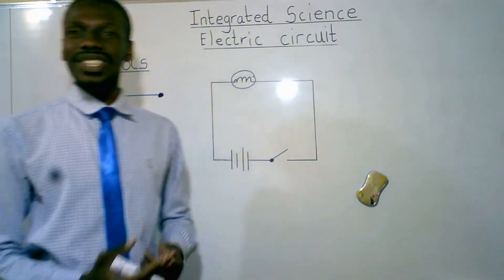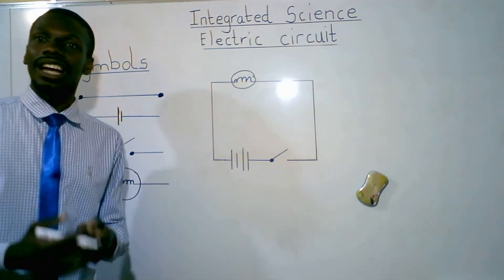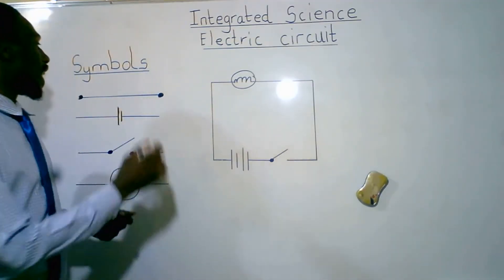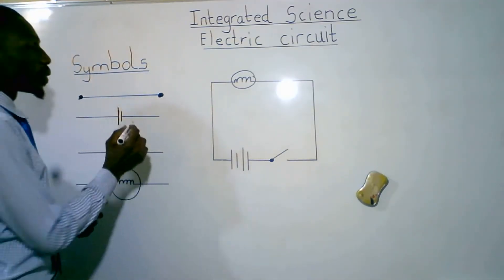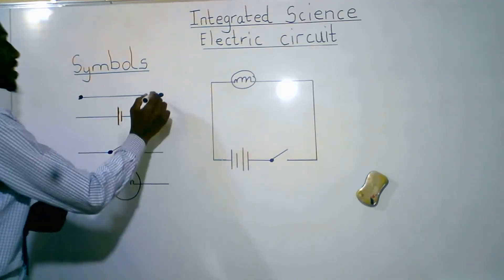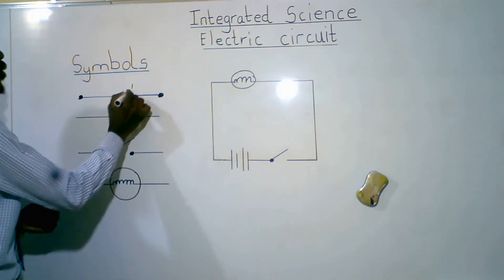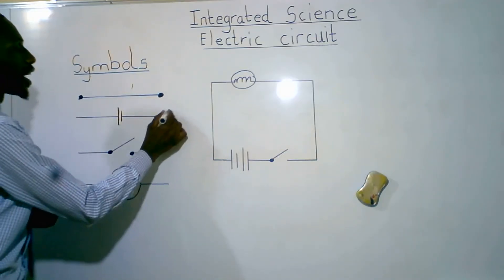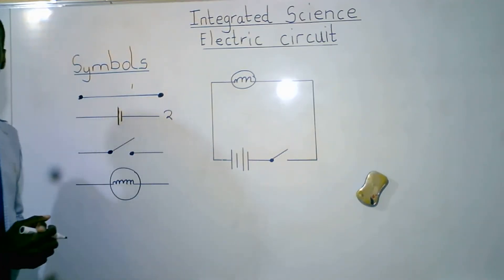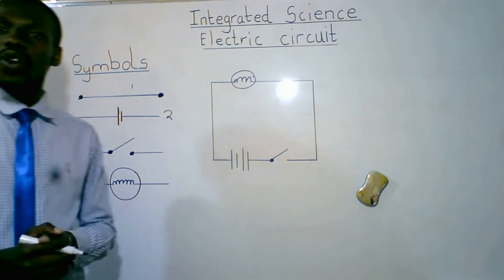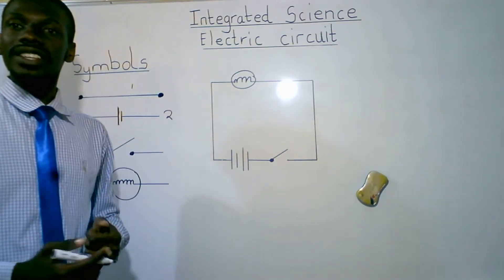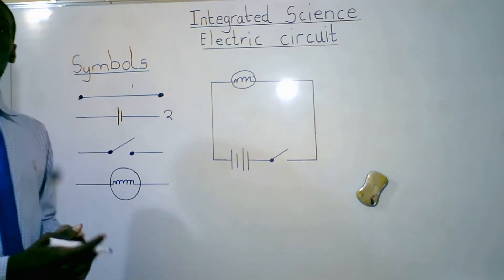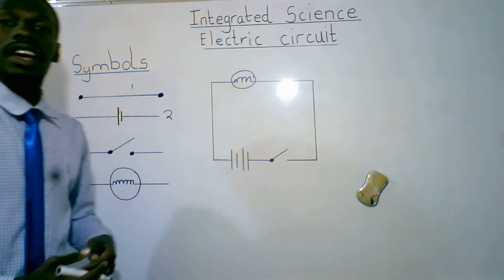Let's discuss the symbols that are used in an electric circuit. An electric circuit has got a connecting wire — this is what we call our connecting wire. The second one is a cell. A cell is the source of energy. When there are two or more, we are calling them to be a battery.